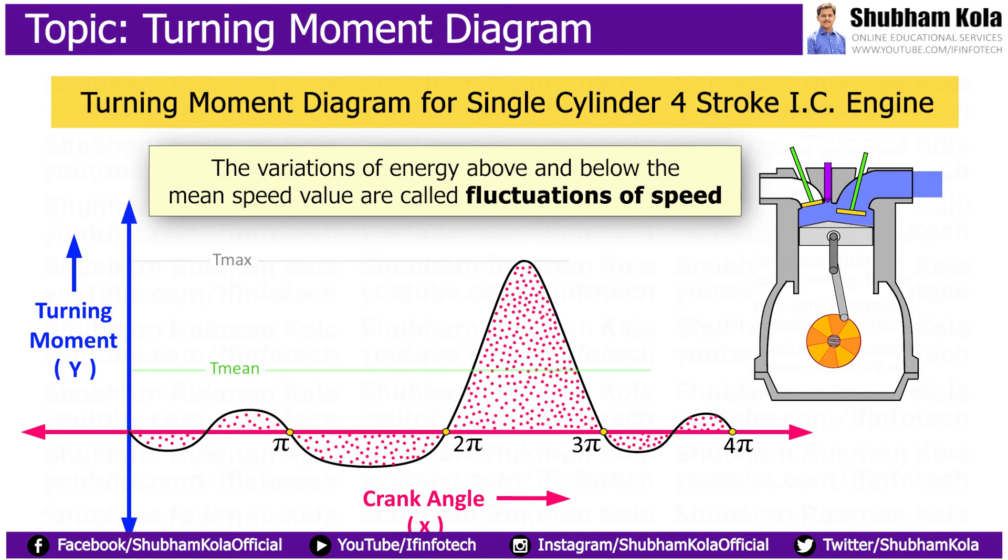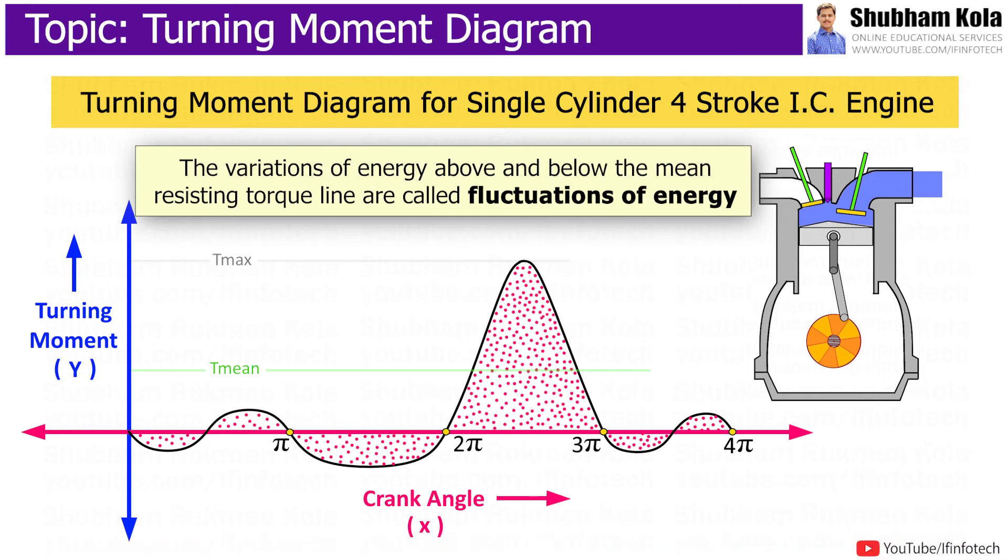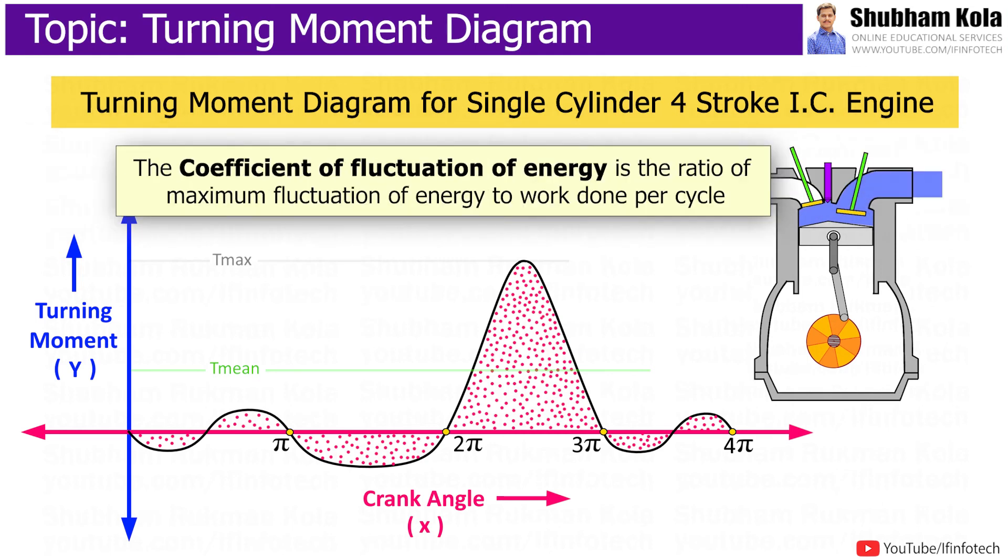The variation of energy above and below the mean speed value are called as fluctuation of energy. The coefficient of energy is the ratio of maximum fluctuation of energy to work done per cycle.